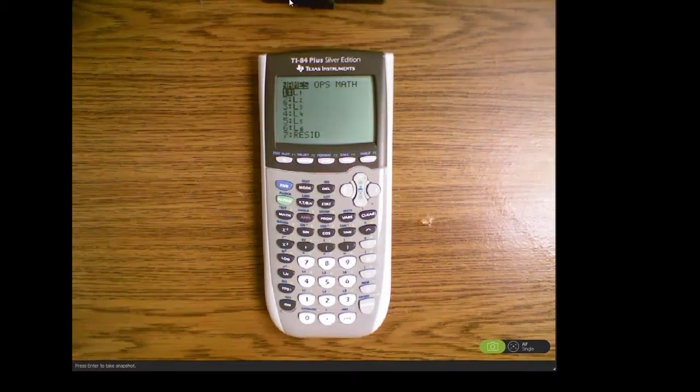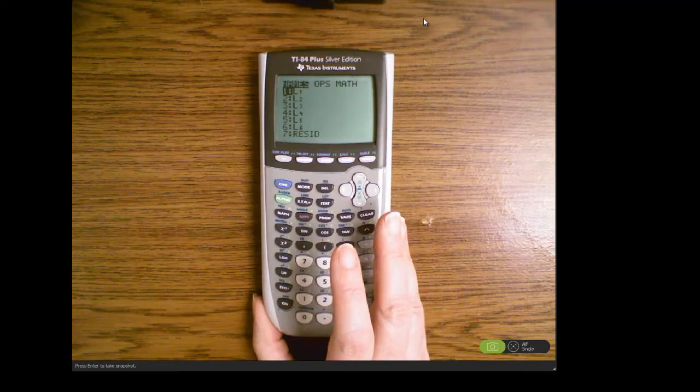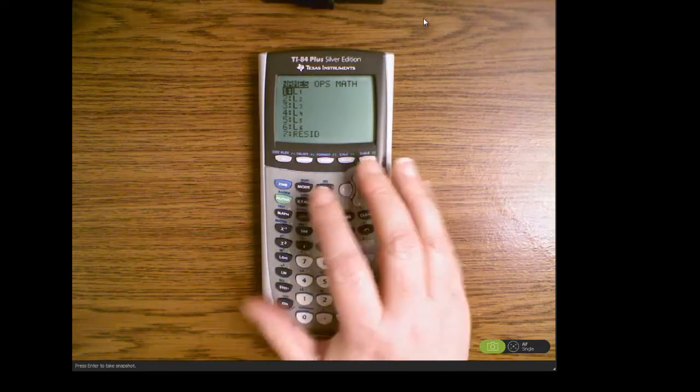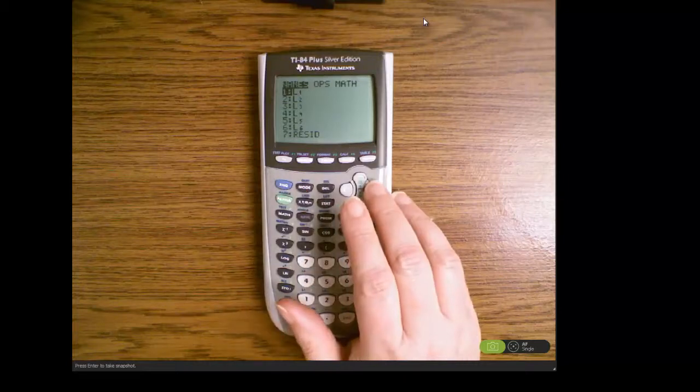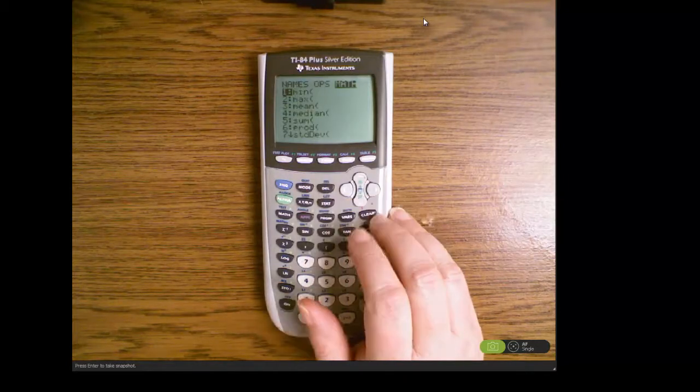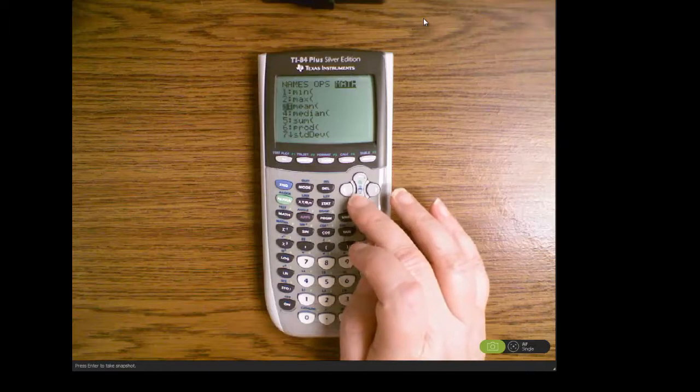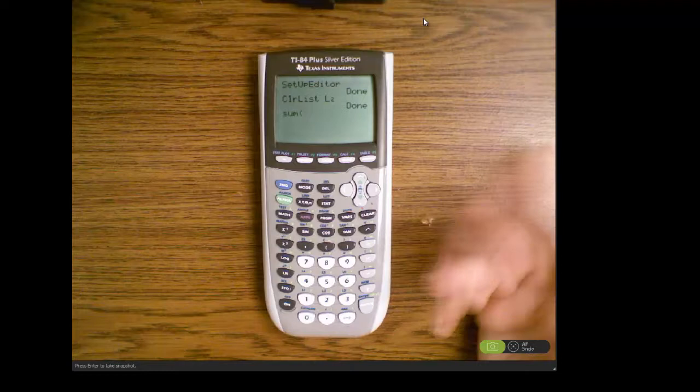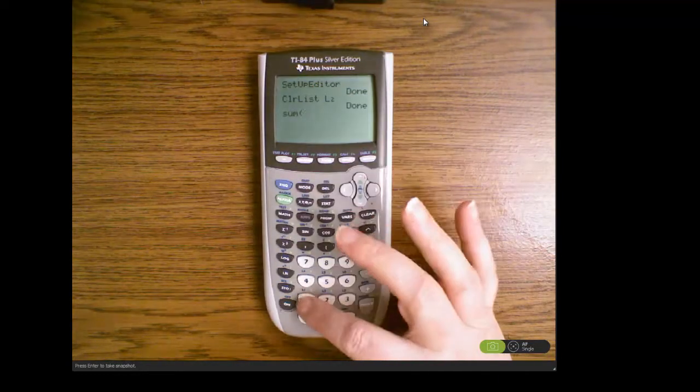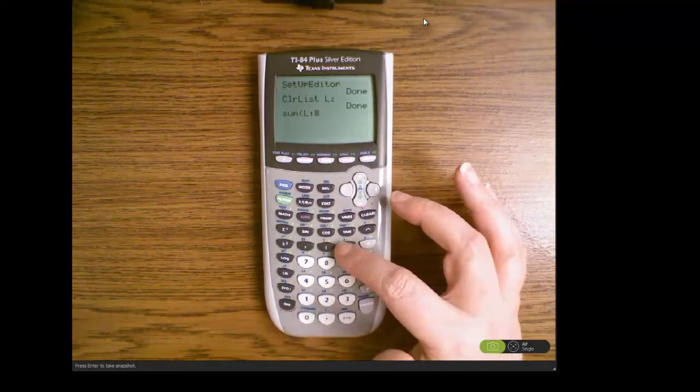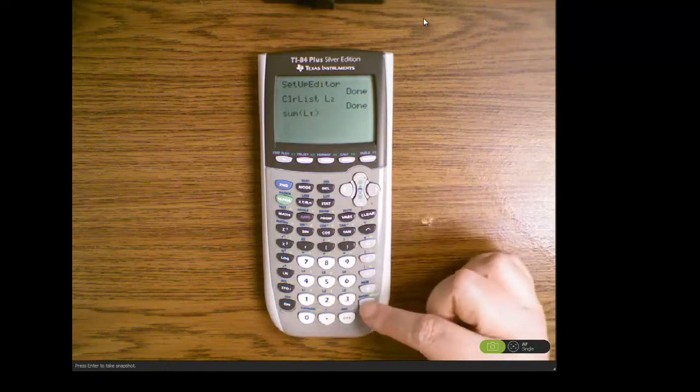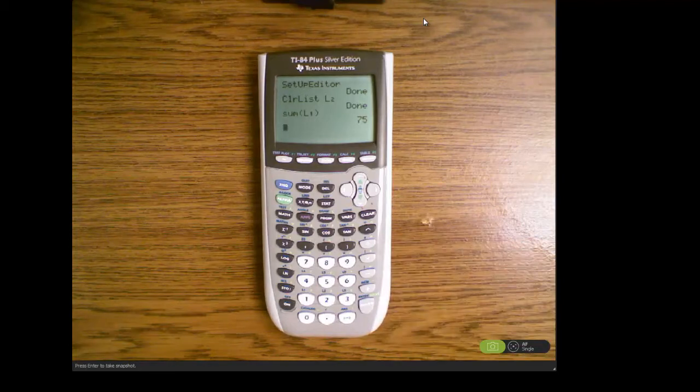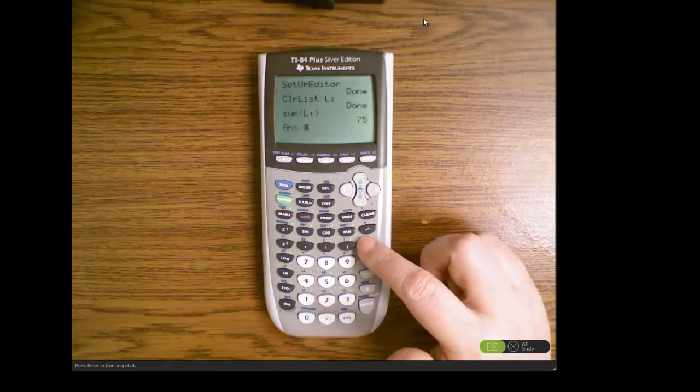Once we're in second STAT we want to go over to the math menu and down to number five which is the sum. We have to tell it which list we want to sum. In our case that will be list one and press enter. That is the sum of list one, that's the sum of our values.